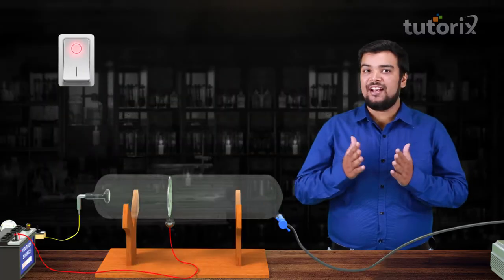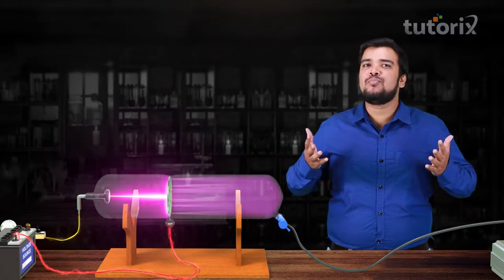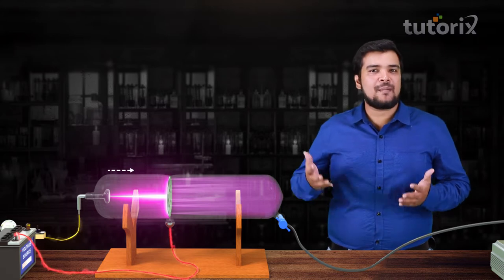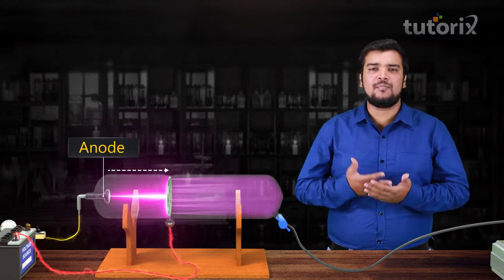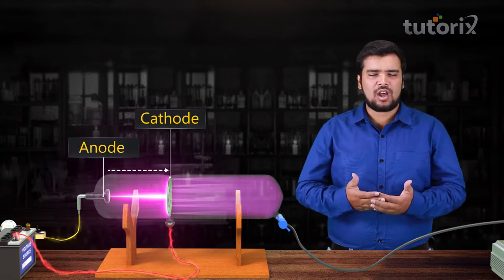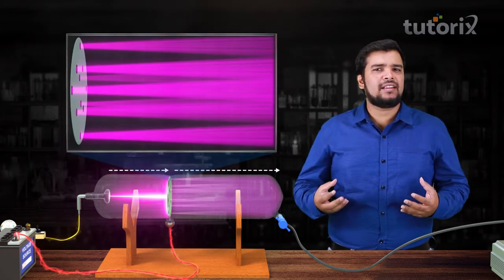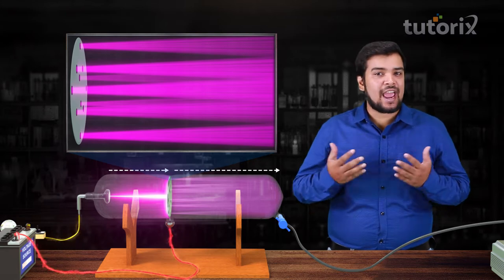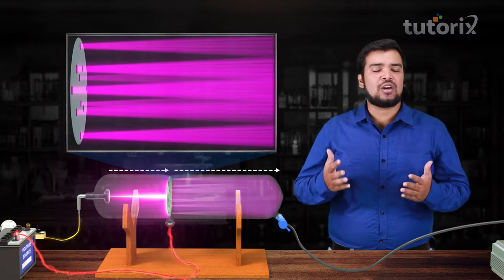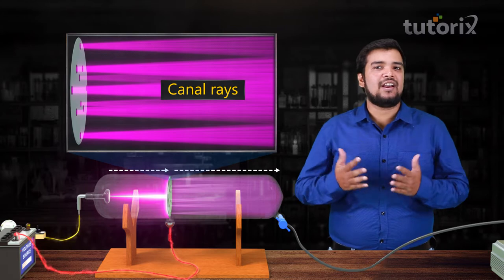Now when he turned on the power, he saw this beautiful pinkish glow which was coming from the anode and which was visible behind the cathode. He saw that these rays were passing through the holes in the cathode. He compared this to rays passing through canals, and that's why he called these rays canal rays.